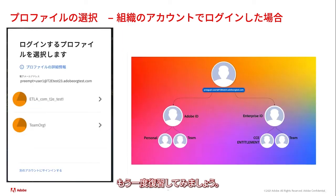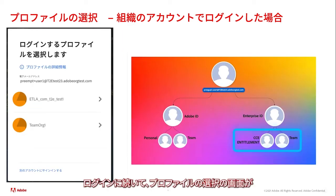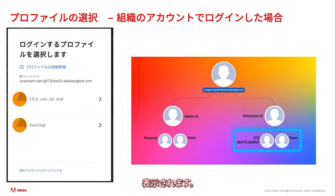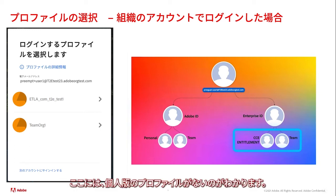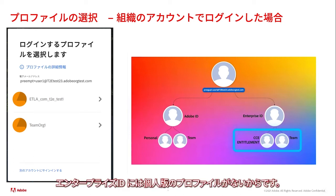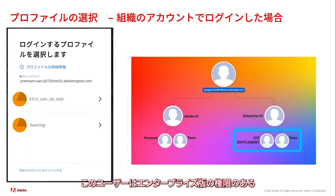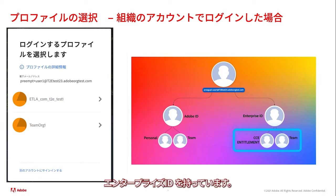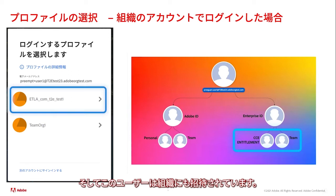Upon clicking company or school account, they are presented with this profile selector sign-in. Notice there is no personal profile shown in this profile selector. This is because they do not have a personal profile on their Enterprise ID. Here, the user has their ETLA or Enterprise ID, which has a CCE entitlement, and the user was also invited to a team.